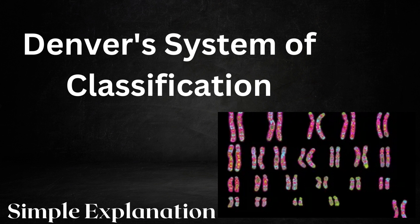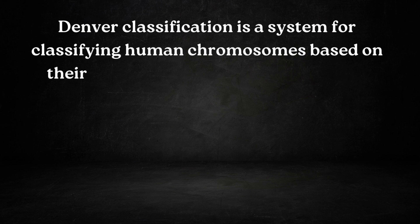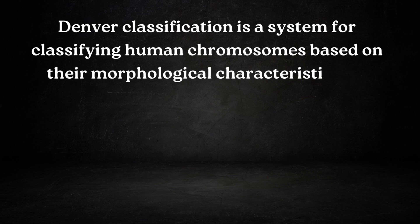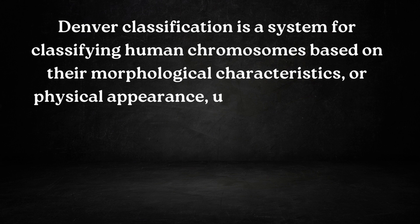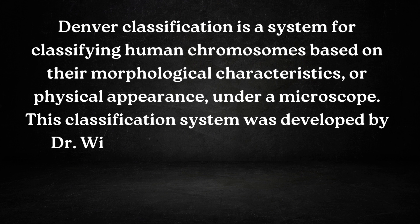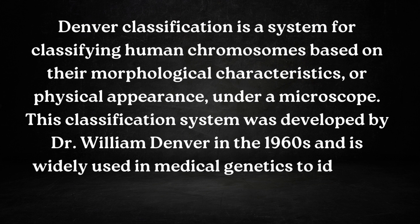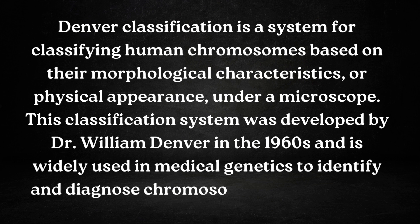Hey guys, welcome back to my channel. Today we are going to discuss a very important topic of biology known as Denver classification of chromosomes. Denver classification is a system for classifying human chromosomes based on their morphological characteristics or physical appearance under a microscope. This classification system was developed in the year 1960 and is widely used in medical genetics to identify and diagnose chromosomal abnormalities.